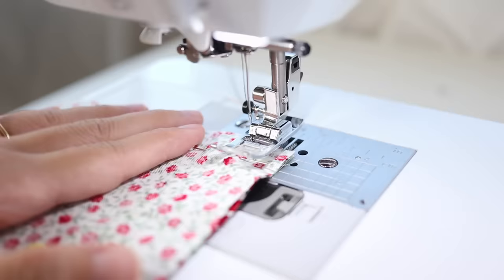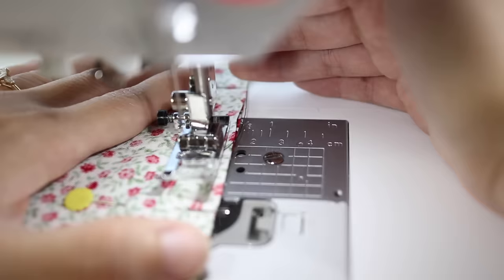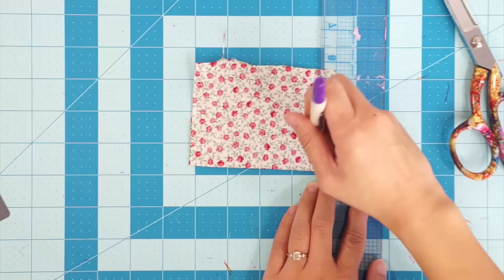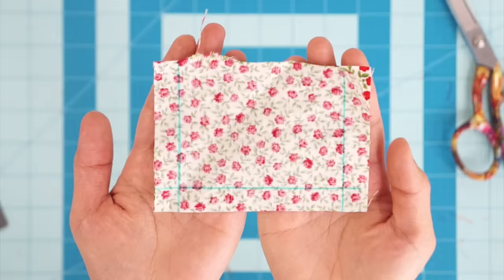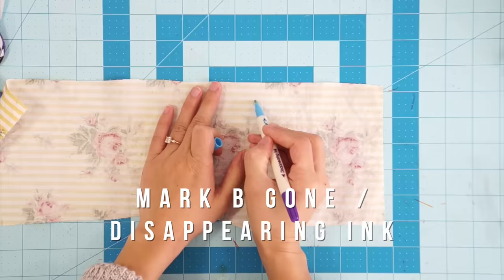With the presser foot lifted up slide your fabric underneath of it and line it up with whatever your seam allowance is. Most machines will have the measurements marked on the metal sewing plate but that can still be confusing to follow so for beginners I recommend you mark your seam lines with chalk or disappearing ink pen or even a bar of soap. Just make sure it's something temporary and won't stain the fabric.